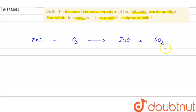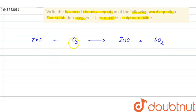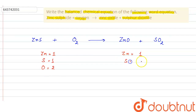Now we have to balance this equation. A balanced equation is one in which the atoms of each element are equal on the reactant side and on the product side. On the reactant side, we have one zinc atom, one sulfur atom, and two oxygen atoms. On the product side, we have one zinc atom, one sulfur atom, and a total of three oxygen atoms.